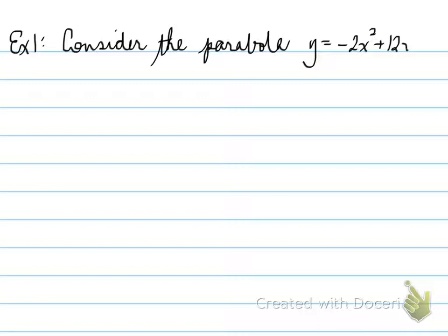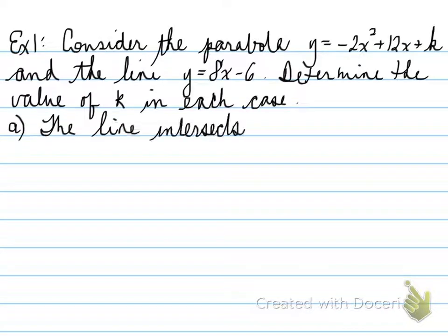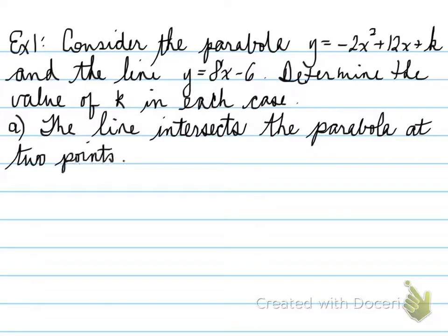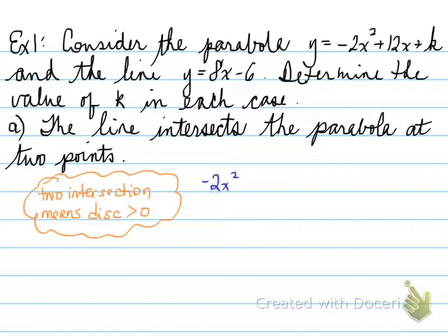Example one. Consider the parabola y equals negative 2x squared plus 12x plus k, and the line y equals 8x minus 6. Determine the value of k in each case. First, if the line intersects the parabola at two points — if there are two intersection points, the discriminant must be greater than 0.